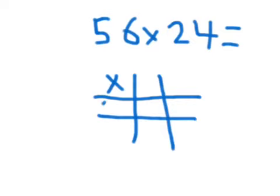I partition 24 and put it here: 20 and 4. Then I partition the 56.